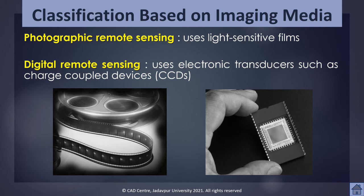It is important to realize that satellite remote sensing is based on digital imaging because a satellite remains in its orbit throughout its life and there is no way to retrieve the film. Therefore, data must be recorded digitally and transmitted via electronic signals. Photographic remote sensing is only possible within the photographic region of the electromagnetic spectrum, that is within the range of 0.3 to 0.9 micrometers.